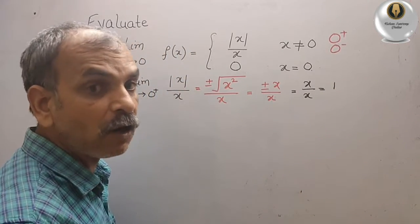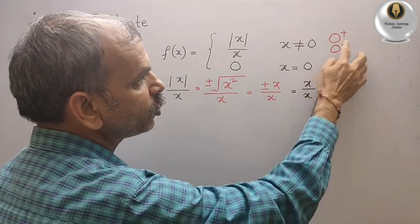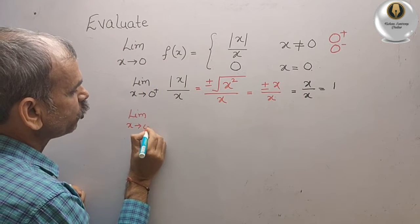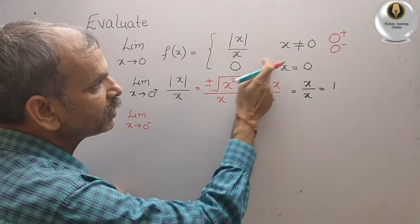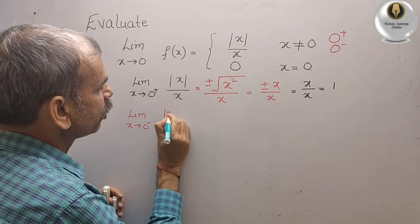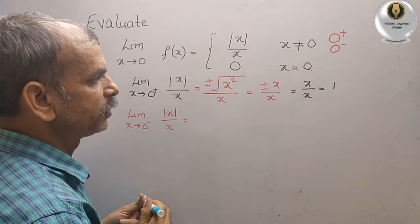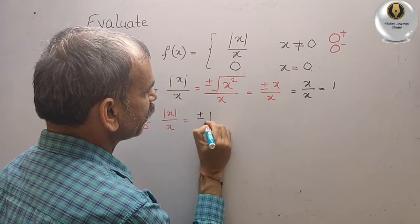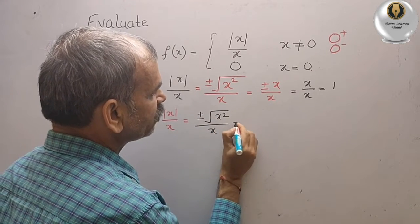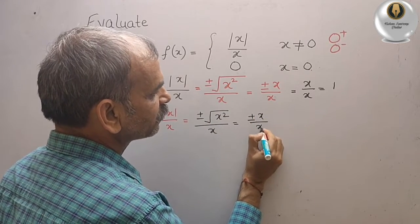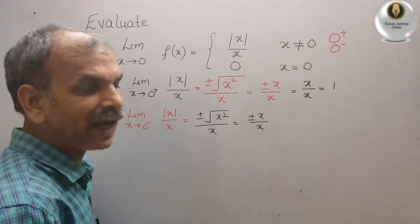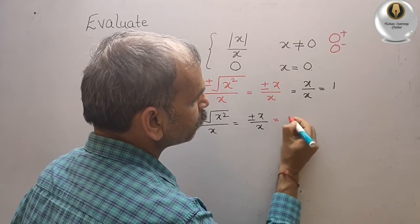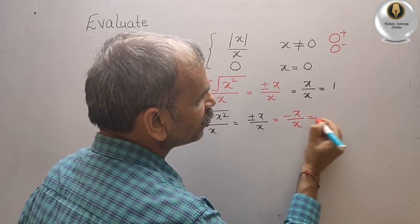Now we take the other side: limit as x tends to 0 minus. The formula remains the same — modulus of x by x equals plus or minus x by x. Since we have 0 minus, we take the minus sign, giving minus x by x, which equals minus 1.